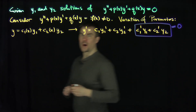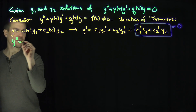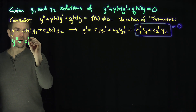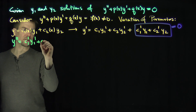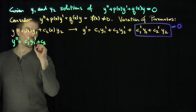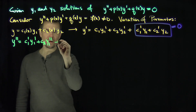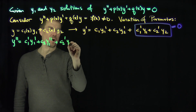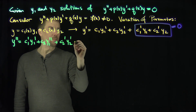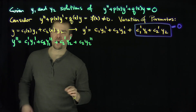Continuing our calculation, y double prime is going to be c1 prime y1 prime plus c1 y1 double prime plus c2 prime y2 prime plus c2 y2 double prime.